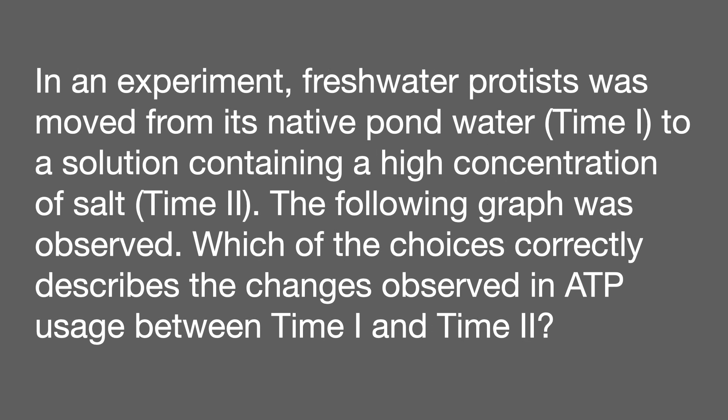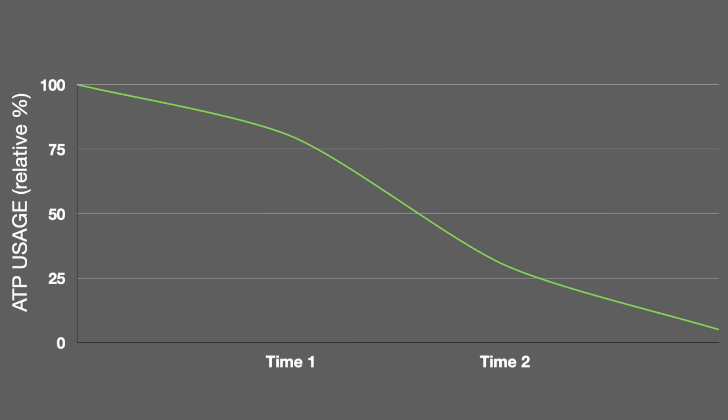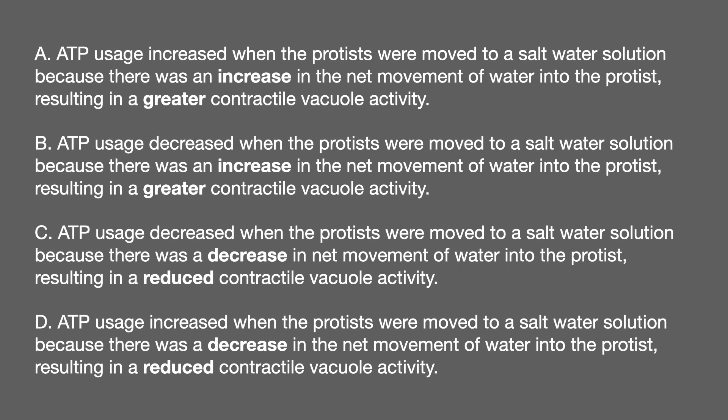In an experiment, freshwater protists were moved from their native pond water at time one to a solution containing a high concentration of salt at time two. The following graph was observed. Which of the choices correctly describes the changes observed in ATP usage between time one and time two? A: ATP usage increased when protists were moved to a saltwater solution because there was an increase in the net movement of water into the protist, resulting in greater contractile vacuole activity. B: ATP usage decreased when the protists were moved to a saltwater solution because there was an increase in the net movement of water into the protist, resulting in greater contractile vacuole activity.